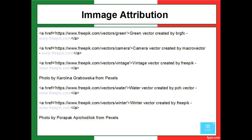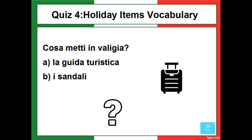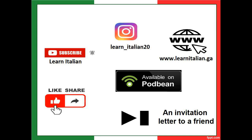Now there is a quiz. Cosa metti in valigia? A. La guida turistica. B. I sandali. You can write the answer in the comment box on my YouTube channel or on my Instagram account, learn underscore Italian 20.